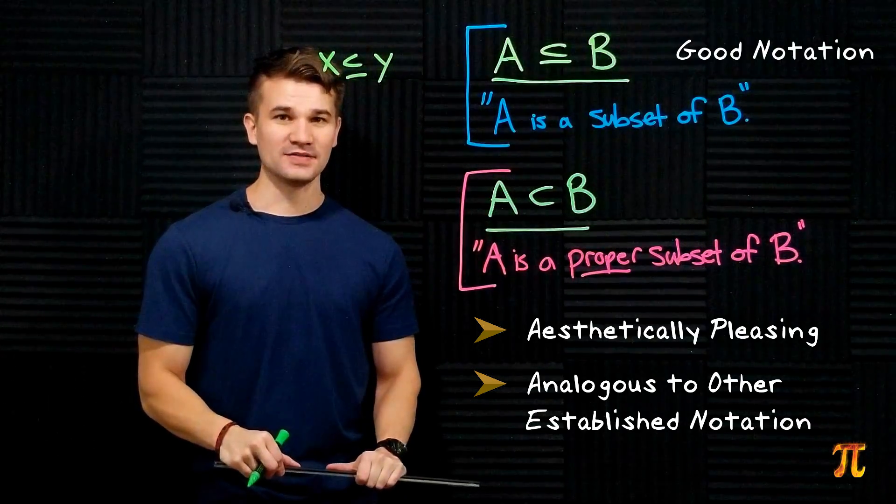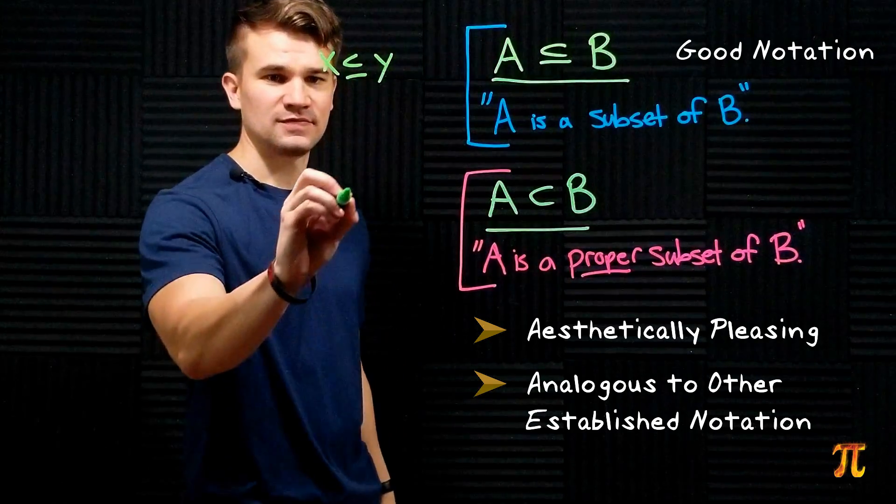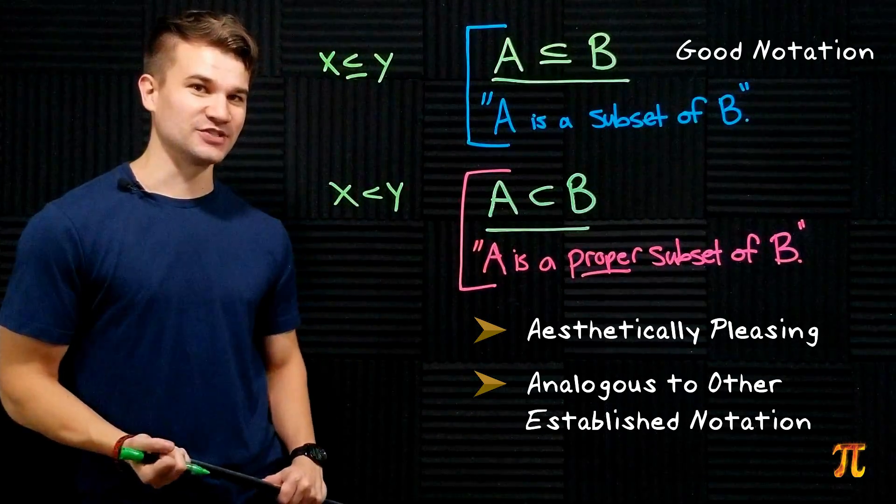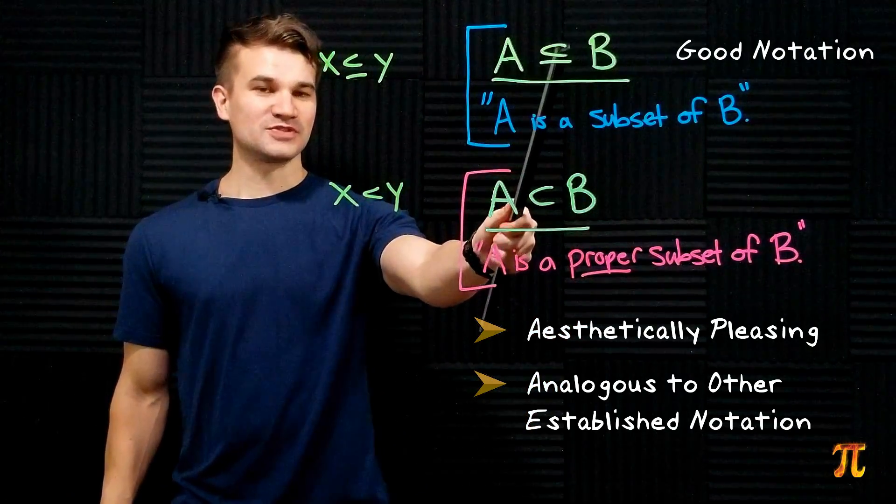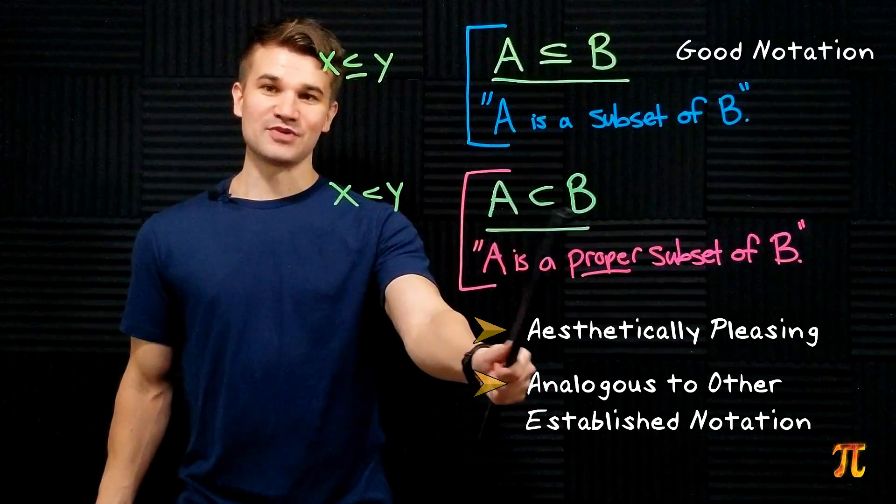This forms a very nice analogy with the subset notation. You can think of this notation as being a proper subset or equal to B, that is what it means, while this means a proper subset of B. The line underneath means allow for equality in the relation.